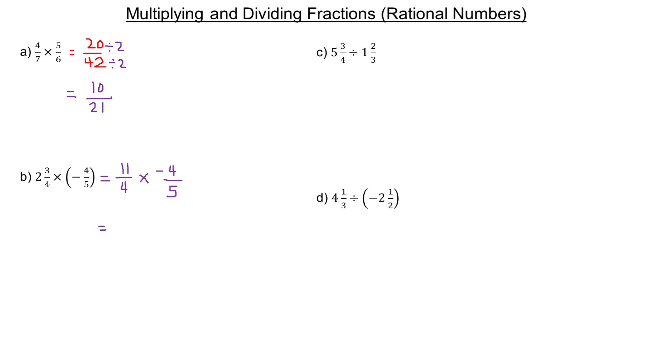The numerators get multiplied: 11 times -4 is -44. In the denominator, 4 times 5 is 20. This one will reduce as well. The numerator and denominator are both even, like they were in A, but they share an even larger common factor.